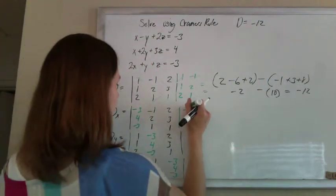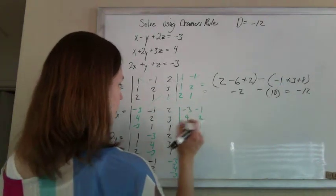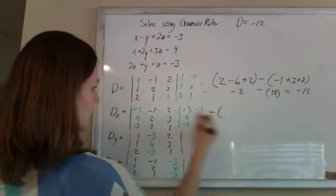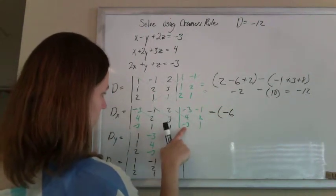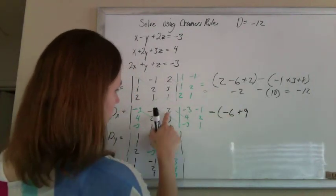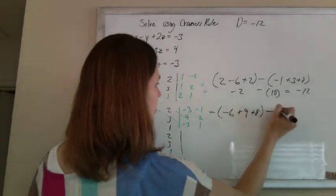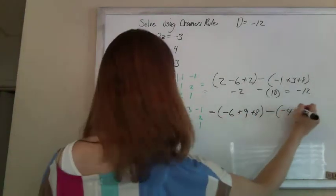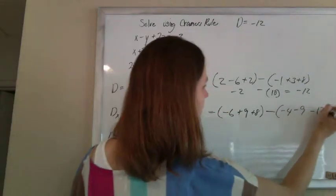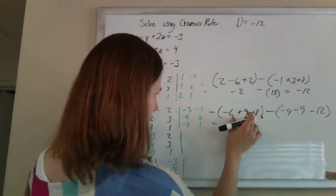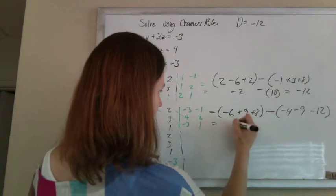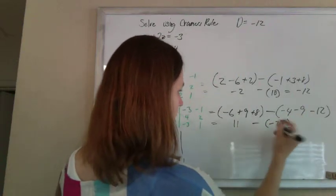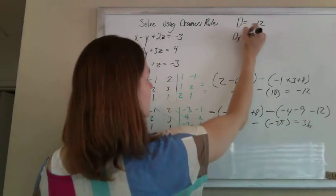Do it again. So negative 3, 4, negative 3, negative 1, 2, 1. Multiplying the forwards, subtract the backwards. So negative 3 times 2 times 1 is negative 6. Negative 1 times 3 times negative 3 is positive 9. 2 times 4 times 1 is 8. Subtract the backwards: negative 1 times 4 times 1 is negative 4. Negative 3 times 3 times 1 is negative 9. 2 times 2 times negative 3 is negative 12. So this is 17 minus 6 is 11, minus negative 13 minus 12 is negative 25. 11 minus minus 25 is positive 36. So dx is positive 36.